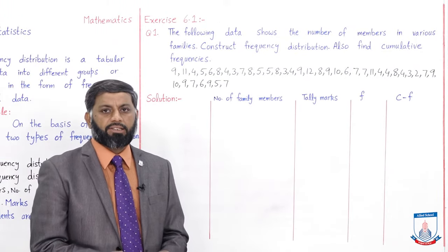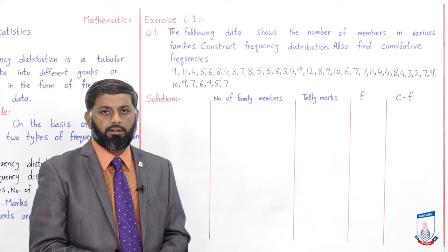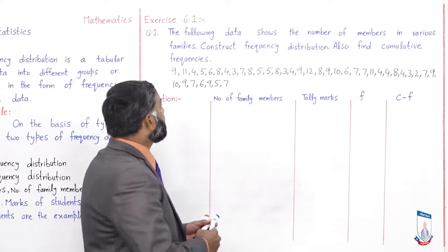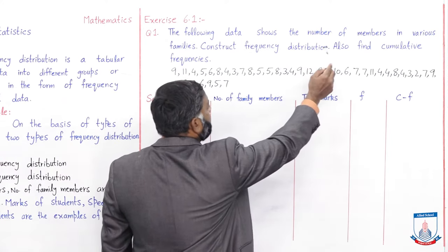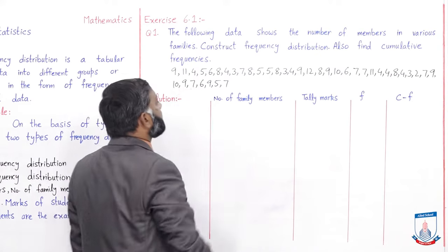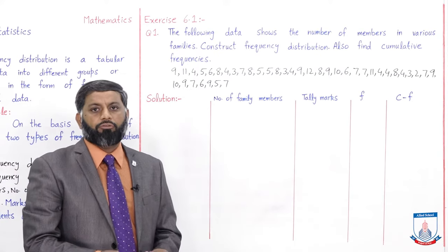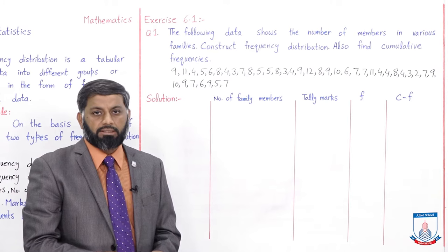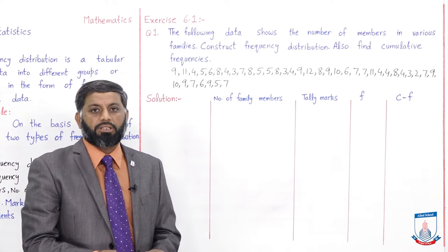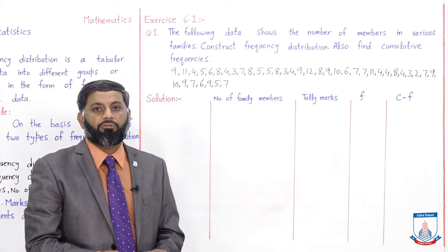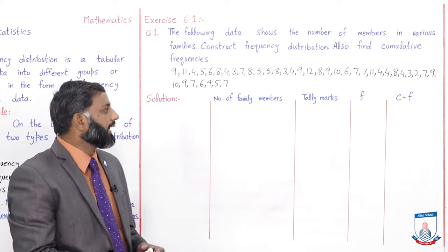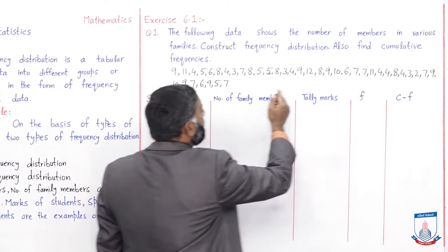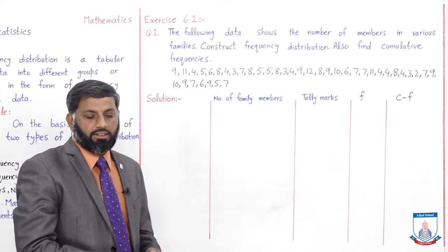Students، اب Exercise 6.1 کا Question Number 1 کریں گے جس میں discrete variable given ہے۔ Question کی statement ہے: the following data shows the number of members in various families. Number of family members ہمیشہ discrete ہوگا — کسی family میں 3.5 members possible نہیں۔ Question میں کہا ہے: construct frequency distribution and also find cumulative frequencies۔